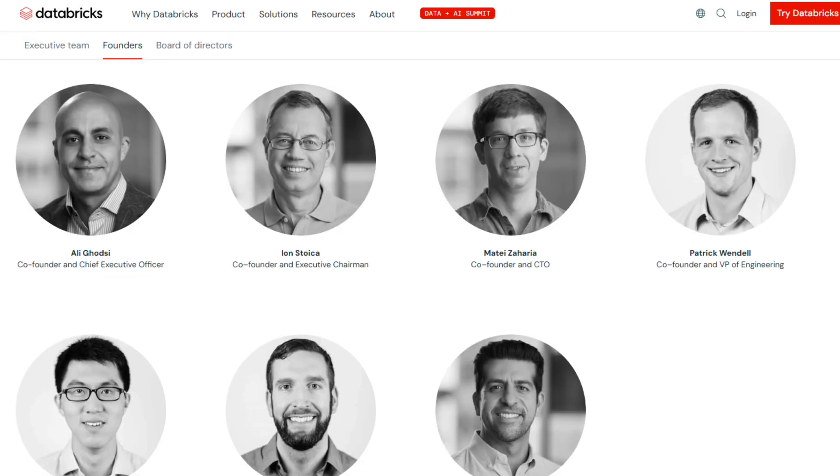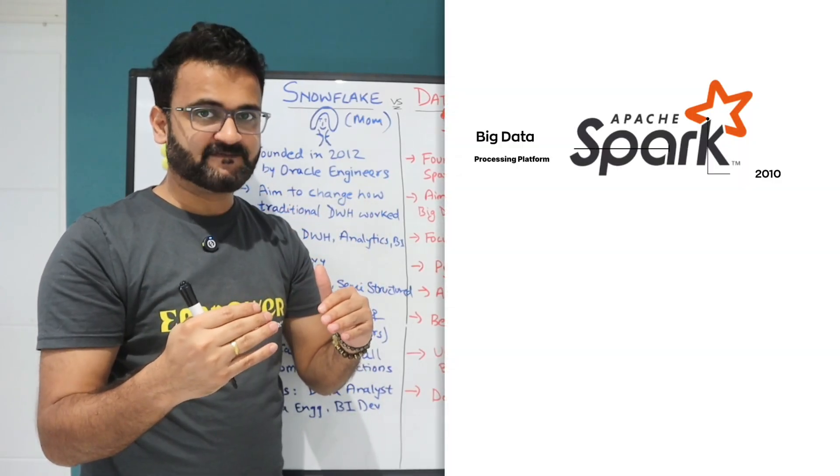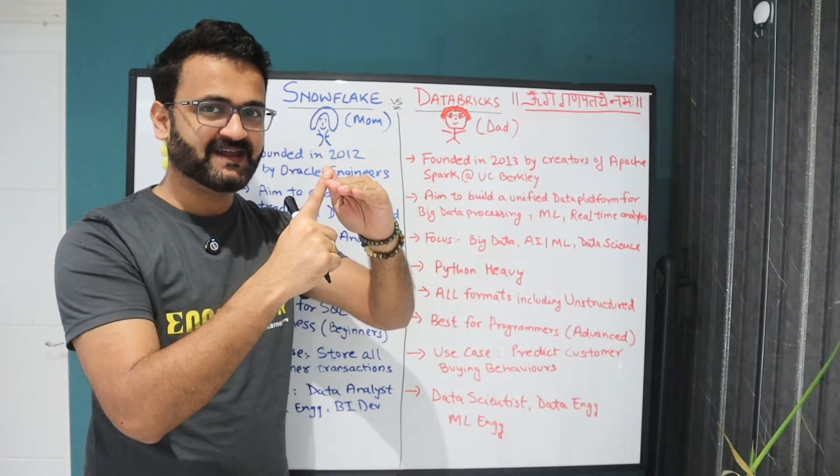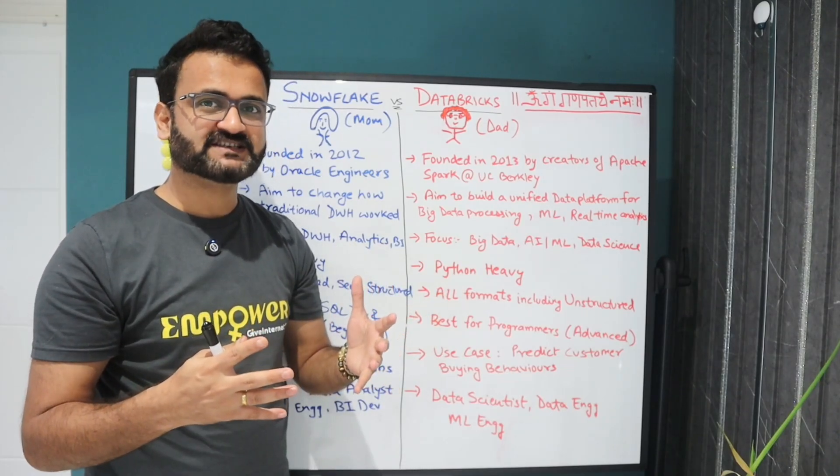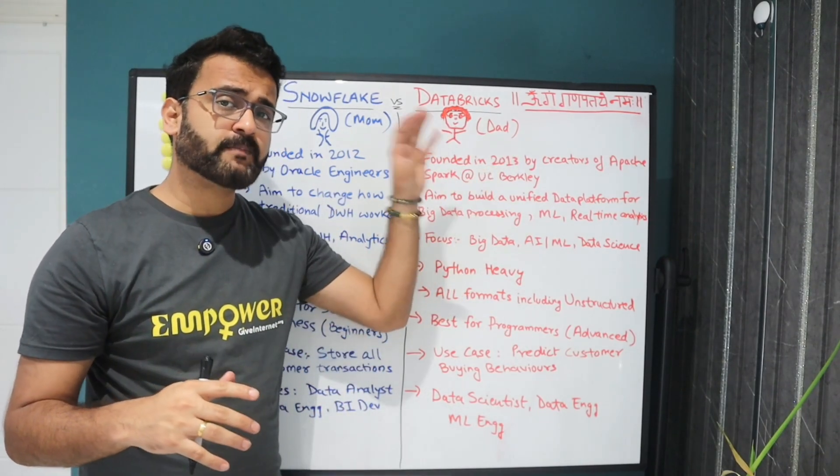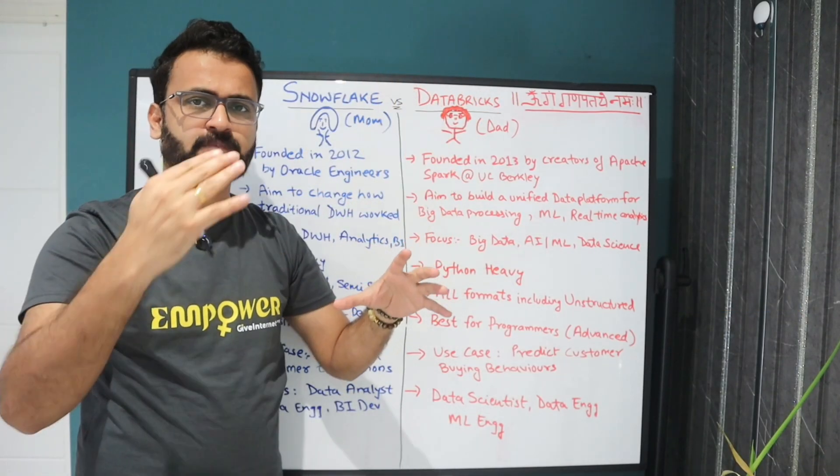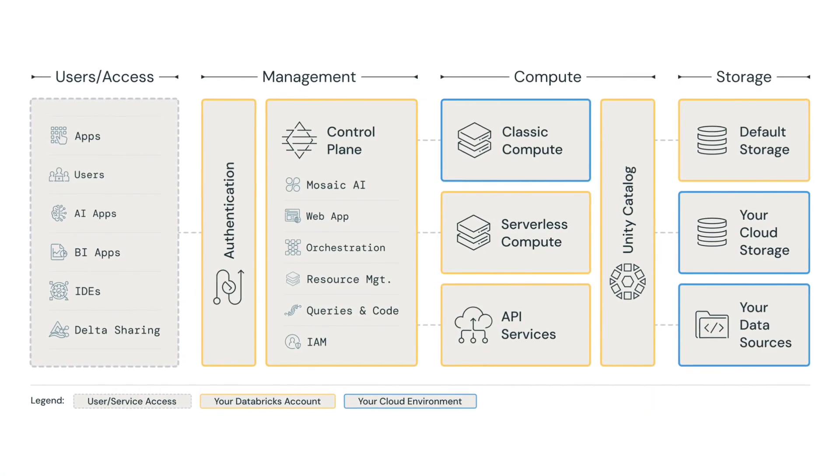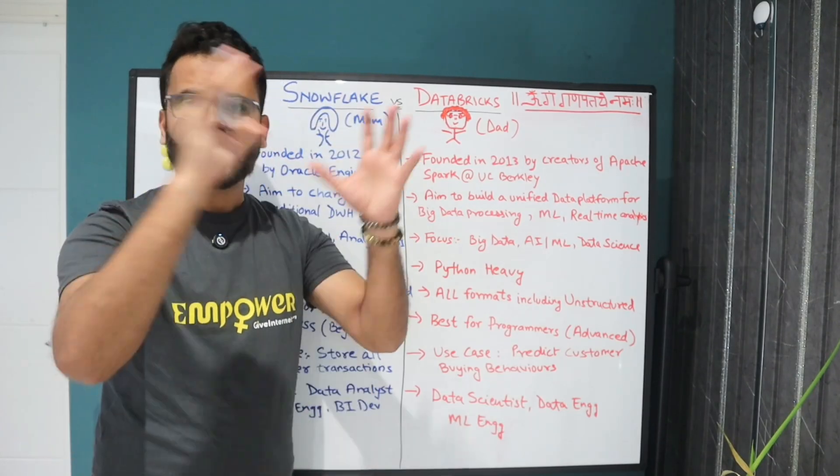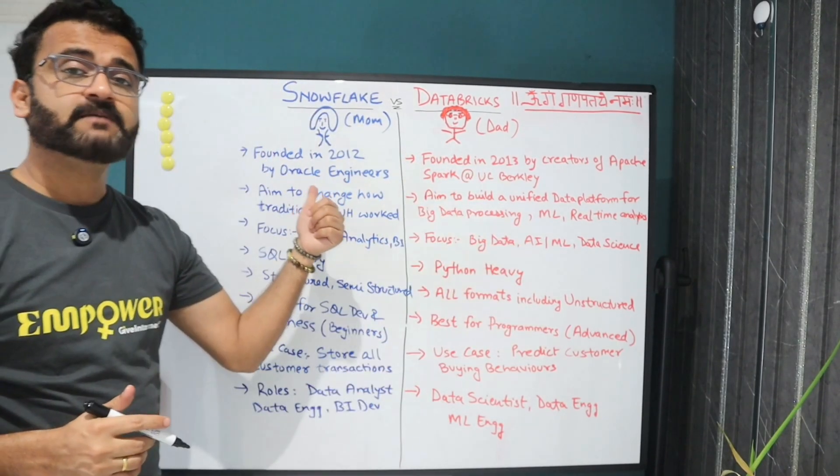Coming to Databricks, it was founded in 2013 by the creators of Apache Spark. Apache Spark came in 2010 which was a big data processing platform based on Hadoop framework. But because Apache Spark was very complex to maintain and not very easy to understand, there were infrastructural challenges. You need to spin up the Spark cluster, maintain Spark cluster which was too much work. So to solve these challenges the creators of Apache Spark at UC Berkeley came up with Databricks. So Databricks in 2013, Snowflake came in 2012.